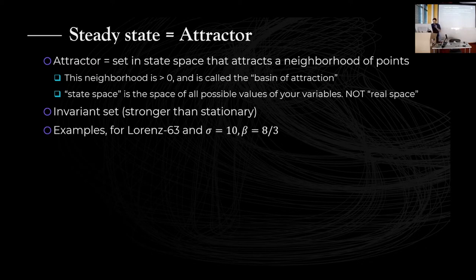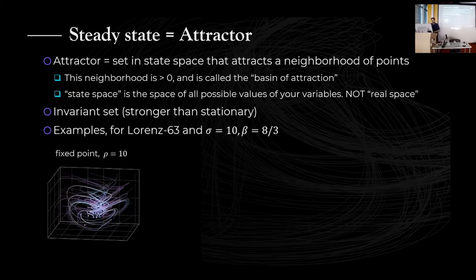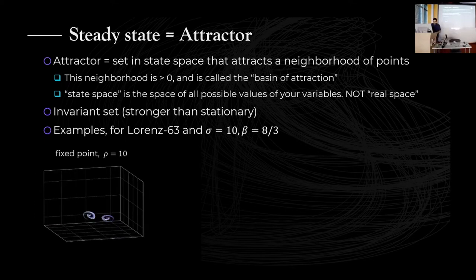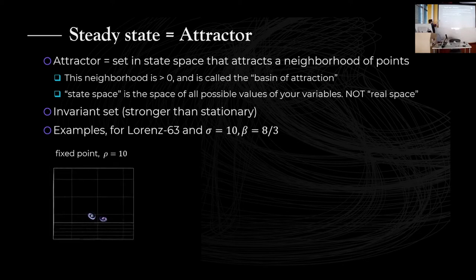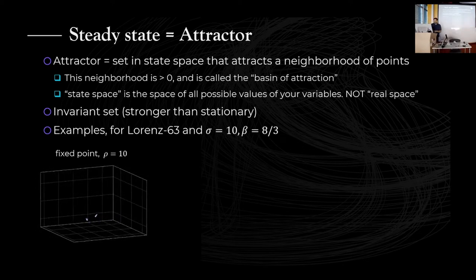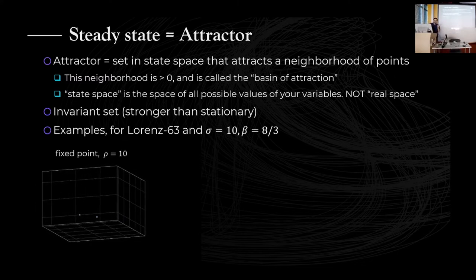Let me give you some examples to make this abstract notion concrete. Here is the state space of the Lorenz system with some randomly scattered initial conditions. As I evolve these forwards in time, all of these initial conditions tend to go to two specific single points in the state space. These are attractors — they have attracted initial conditions and they are called fixed point attractors because they are just a single point.